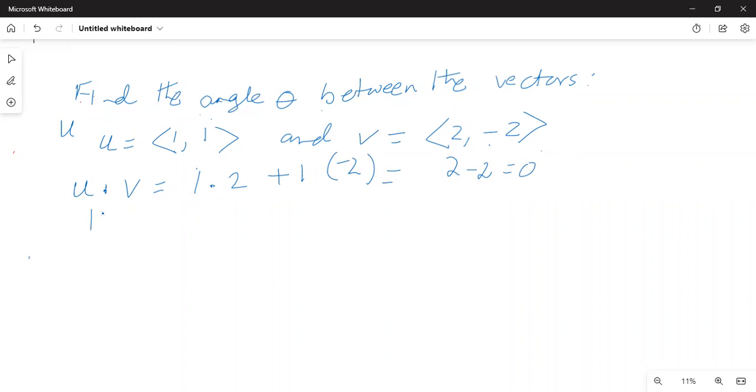Now the magnitude of vector u is equal to square root of 1 square plus 1 square is equal to square root of 1 plus 1 equal to square root of 2.